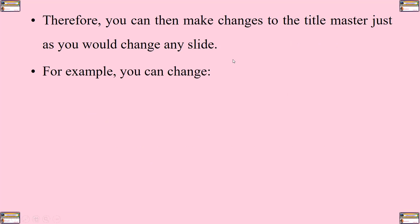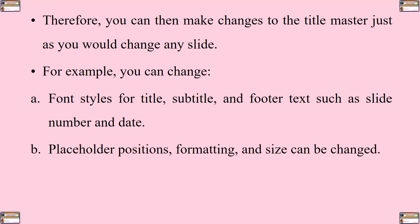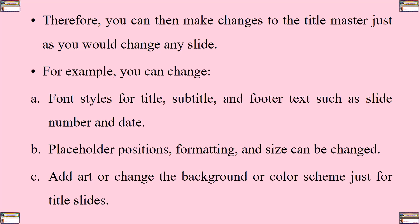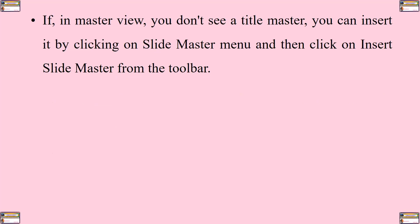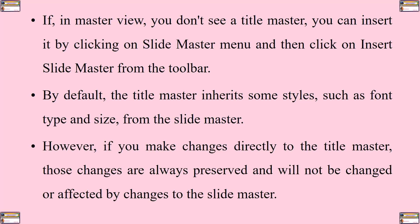You can change the font styles for title, subtitle, and footer text such as slide number and date. You can also change the placeholder positions, formatting, and size. You can also add or change the background or color scheme for all title slides. By default, the title master inherits some styles such as font type and size from the slide master. However, if you make changes directly to the title master, those changes are always preserved and will not be affected by changes to the slide master.